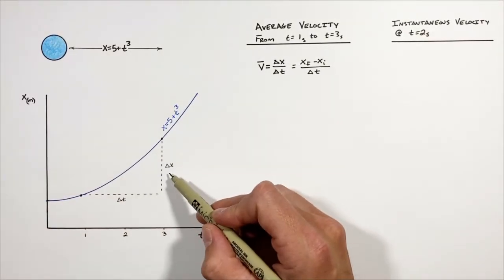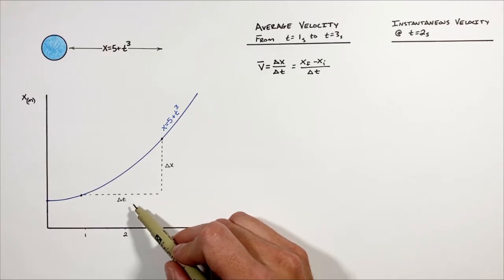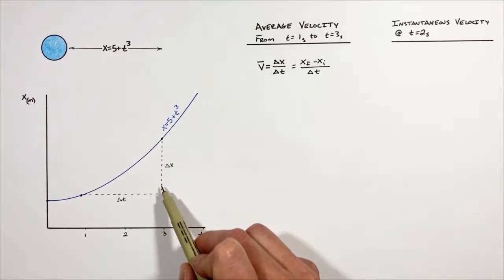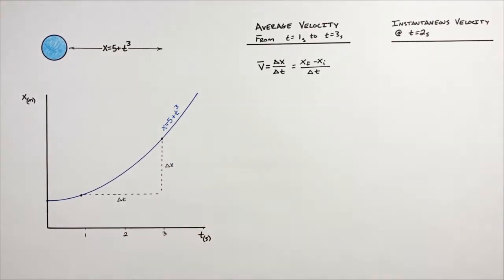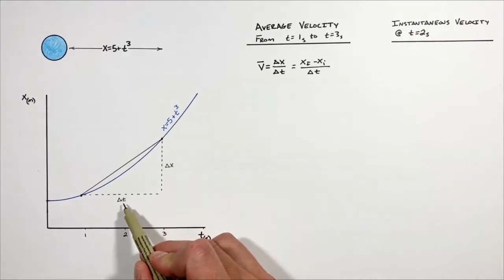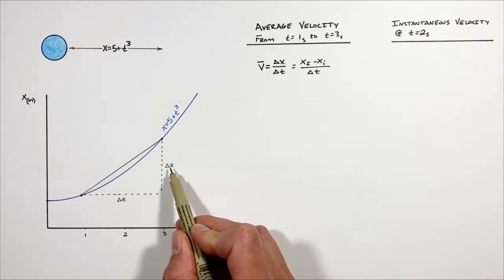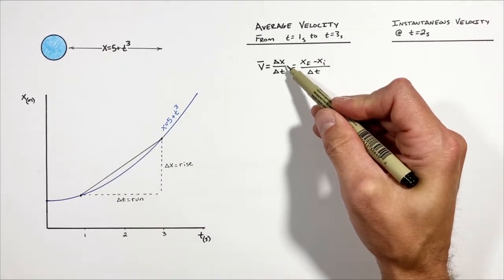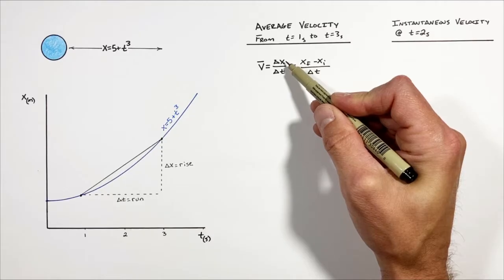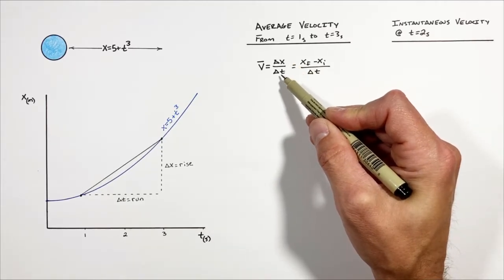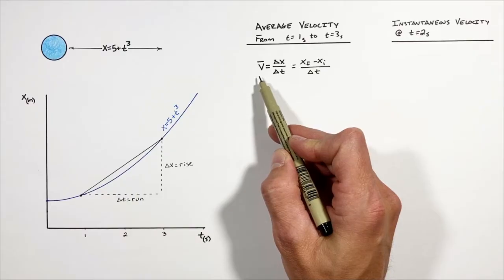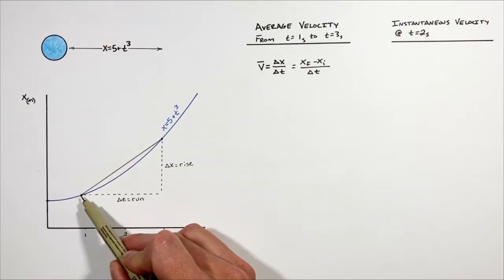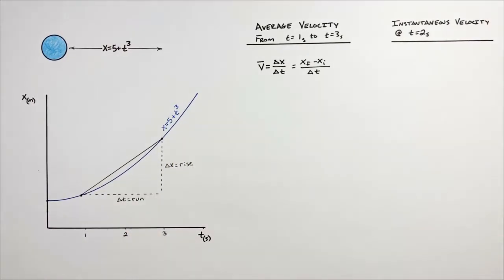If we look at these two quantities — change in position and change in time — as though we're in math class, we can see that they are ultimately forming two sides of a right triangle. The two sides of this right triangle you can think of as being the rise and the run. So what that means is our change in position, or rise, divided by our change in time, or run, gives us the average velocity — really, the slope from this point to this point.